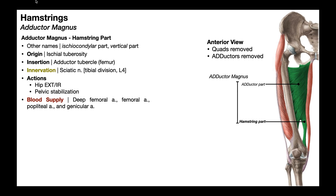The semitendinosus, semimembranosus, and biceps femoris are the three true anatomic hamstring muscles. However, there is another muscle that is not a true anatomic hamstring but functions as one — the hamstring part of the adductor magnus, considered a functional hamstring muscle. It is not in the posterior compartment of the thigh; it belongs with the adductor muscles in the medial compartment.